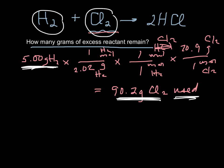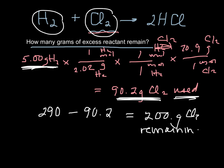Well, in the problem, it said I started with 290 grams, and if I use 90.2 grams, I have about 200 grams of chlorine remaining. That's how you find the excess reactant remaining. That's it.